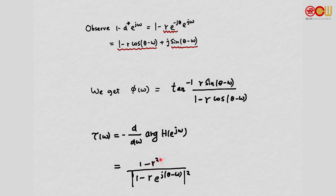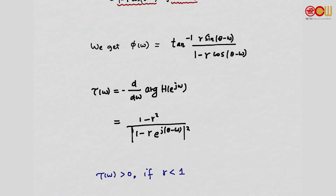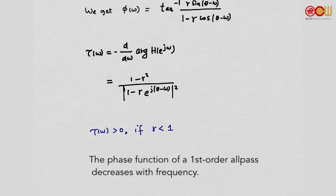The group delay is greater than 0 if r < 1, which we have assumed since D is inside the unit circle. The group delay is the negative of the slope of the phase function, and it's always positive, which means the slope is always negative. Therefore, the phase function of a first-order all-pass decreases monotonically with frequency.